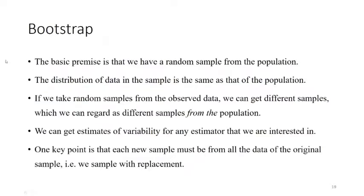The basic premise of the bootstrap is that we have data assumed to be a random sample from the population. If you take random samples from the data, you can assume those different samples are actually samples from the population — simulating what it's like to get random samples from the population. You sample with replacement, so you don't remove data from one sample when taking the next, and you take samples exactly the same size as the original. From the variability across different samples, you can get standard errors and p-values.